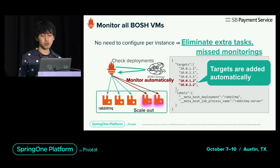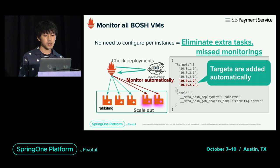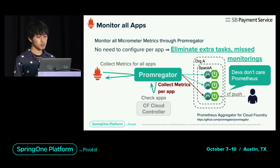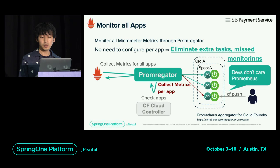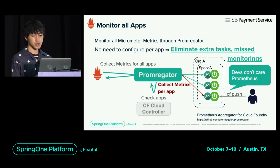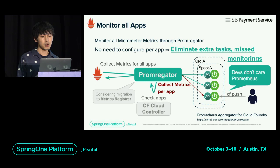Similarly for apps, using the metrics aggregation app called Prometheus, when developers push a new app, collection starts automatically. Since developers do not need to set up individually for Prometheus, this also reduces tasks and prevents omissions. Currently, we are considering migration to metrics registrar — a Cloud Foundry component — for simplifying the configuration.